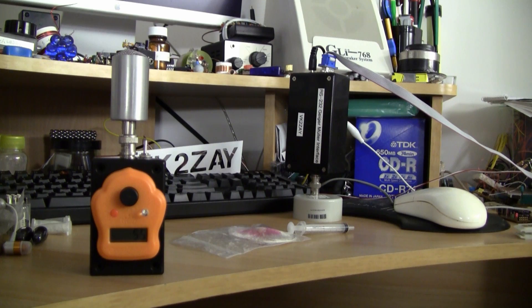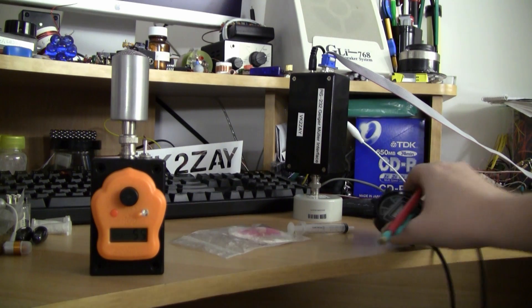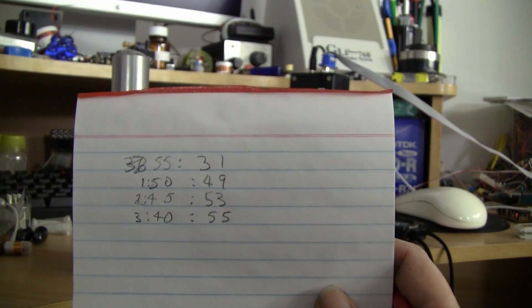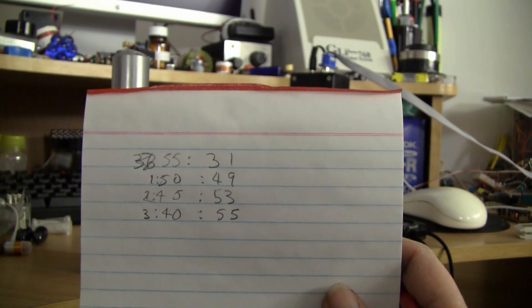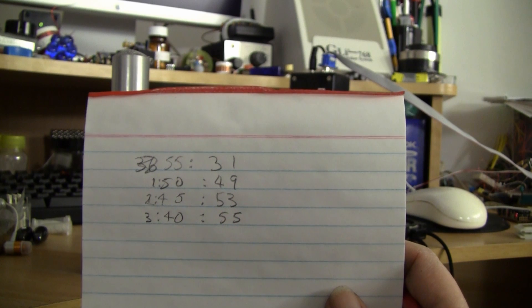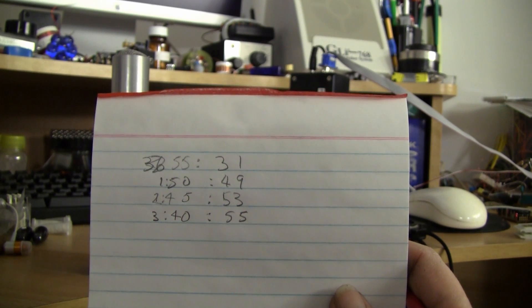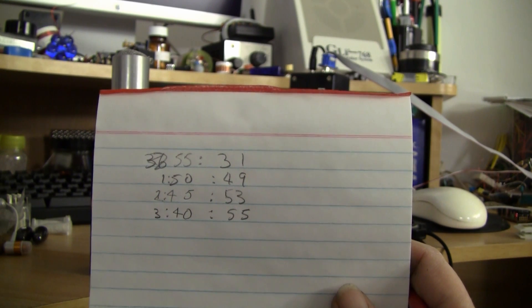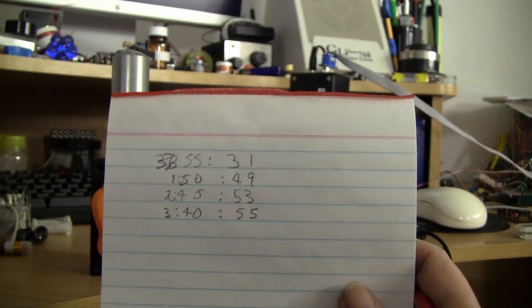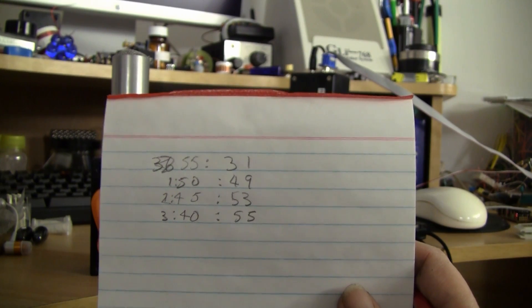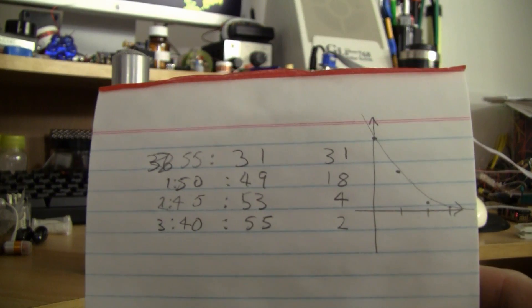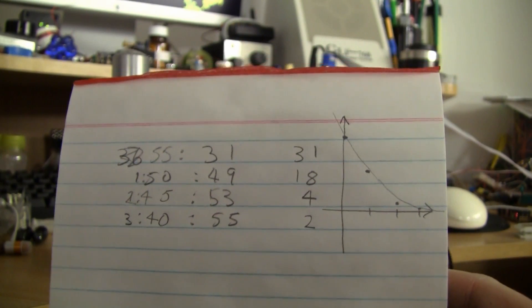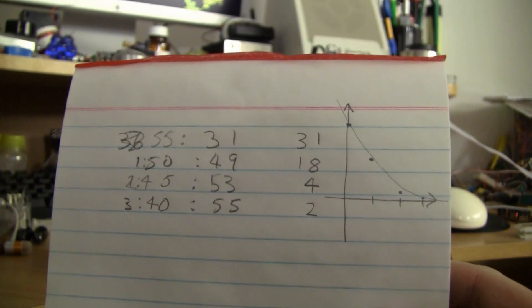Alrighty, so we got 31, 49, 53 and 55 cumulative counts, and I'll draw a pretty picture for you, but as you can see, it decays away quite quickly. Ta-da, very rough and ready, but what do you know, physics works.